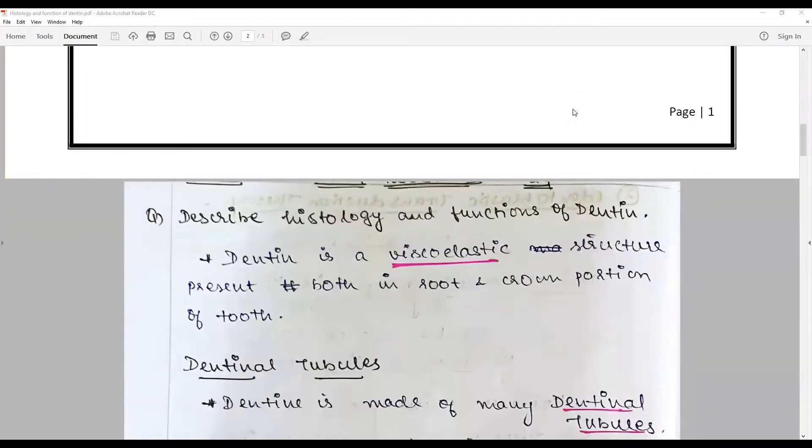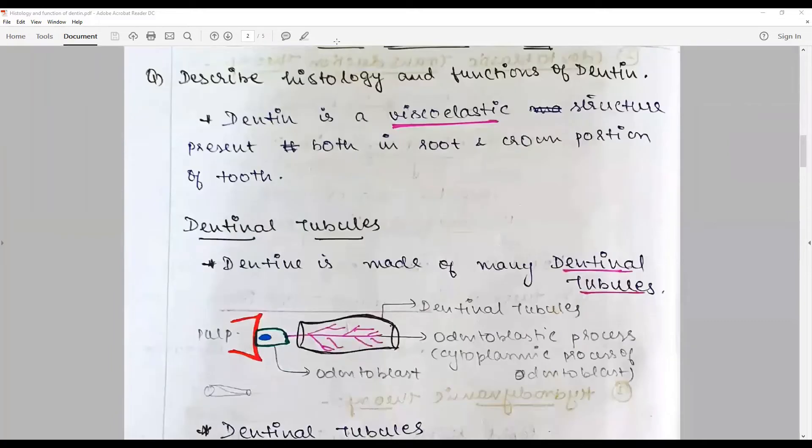You need to give a brief introduction. Dentin is a viscoelastic structure present both in root and crown portion of the tooth. The functional unit is dentinal tubules.